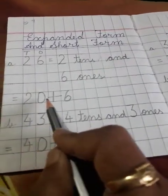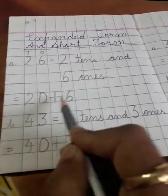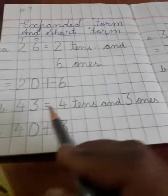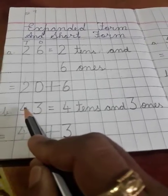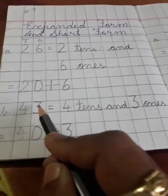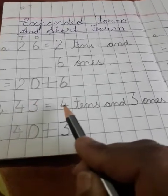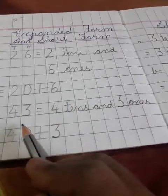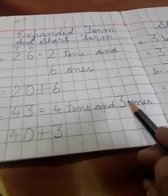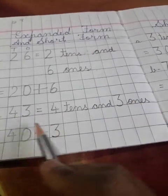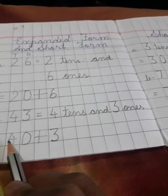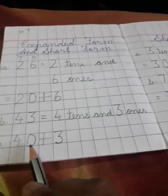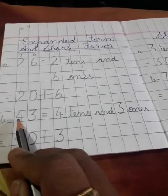So we will write the expanded form of 26 is 20 plus 6. Another example is 43. In same way, 4 is representing for tens and 3 is representing for ones. So 4 tens and 3 ones. 4 tens means 40 plus 3 which is ones. So 40 plus 3 is the expanded form of 43.